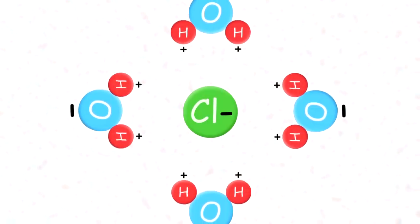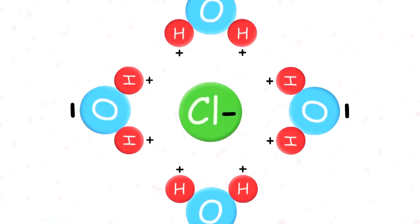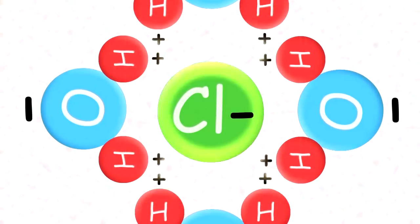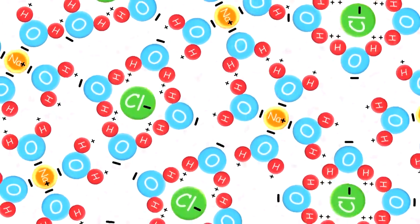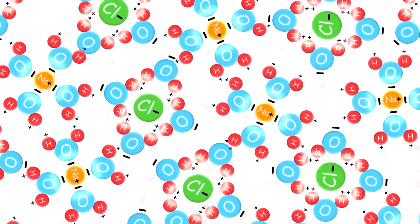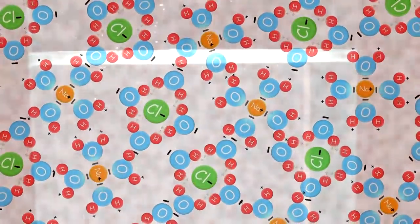The same thing happens in reverse to the chloride ions, which have a negative charge. Each of those is surrounded and isolated by H2O molecules leading with their positively charged hydrogen sides. Each salt crystal is broken into tiny pieces, dissolved by and into the water.